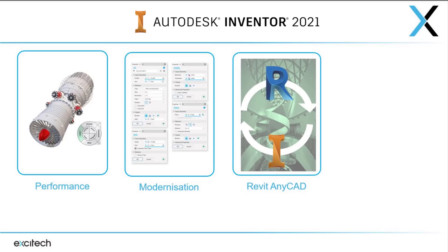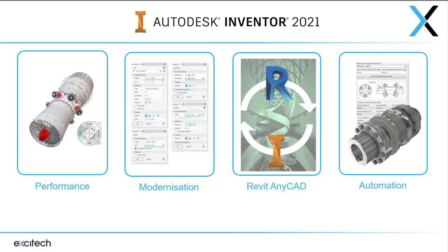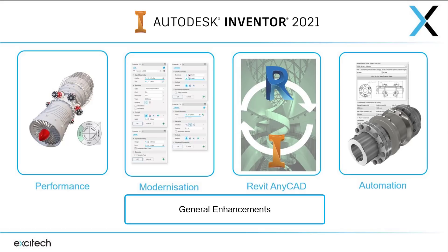The fourth area they have looked at improving is Automation — reducing lengthy procedures by creating tasks and routines using iLogic. Also improving repeatability tasks by adding presets to frame generator and improving the template sheet set formats in drawings. These have all been incorporated into the general enhancements for the software, which I'm going to be demonstrating and giving you some examples of how you will use these in your day to day work.